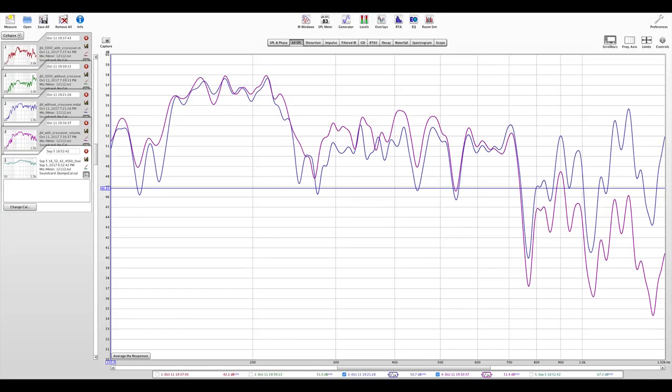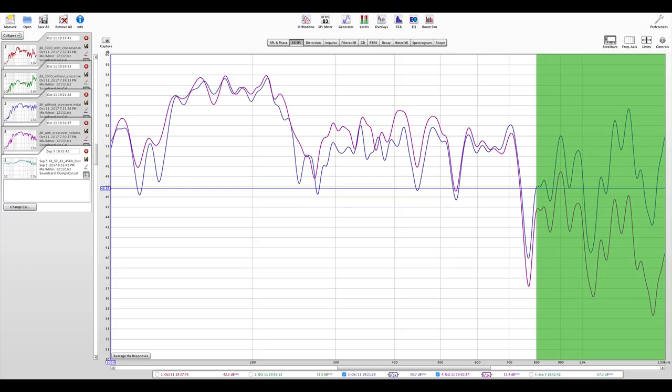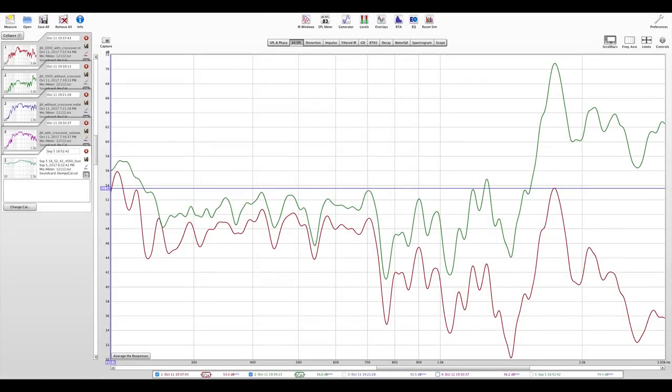This first measurement shows the frequency response from 100hz up to 1500hz. The blue line is without the crossover in place, while the pink line shows the response with it in line. It's plain to see that above 800hz the pink line is tracking lower than the blue one. I ran another measurement up to 3000hz to show that this trend continues as the frequency rises, exactly as planned.